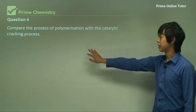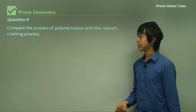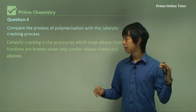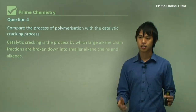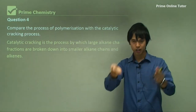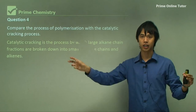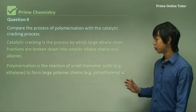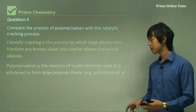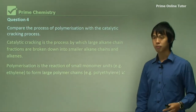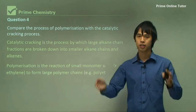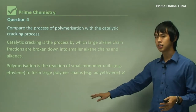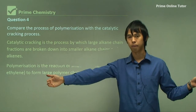Compare polymerization with catalytic cracking. Catalytic cracking is the process by which large alkane chains are broken down into smaller alkane chains and alkenes. Polymerization is the opposite: we take small monomer units — similar to alkenes — and connect them together to form large, almost saturated polymer chains. One takes a big thing and cuts it into smaller pieces; polymerization takes small monomers and sticks them together to form a big chain.